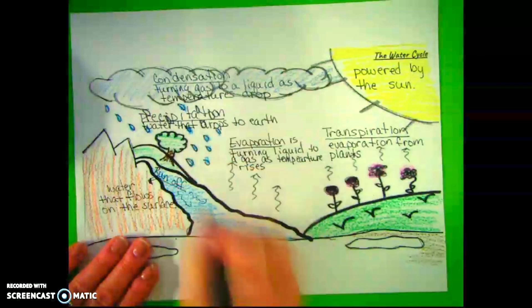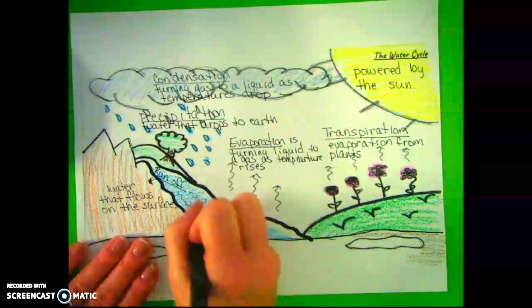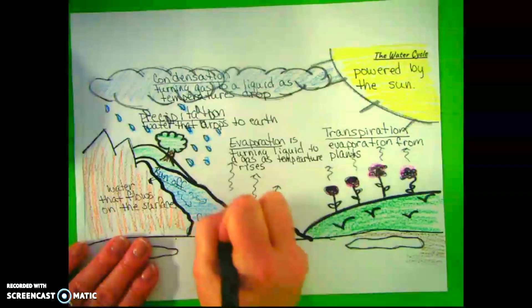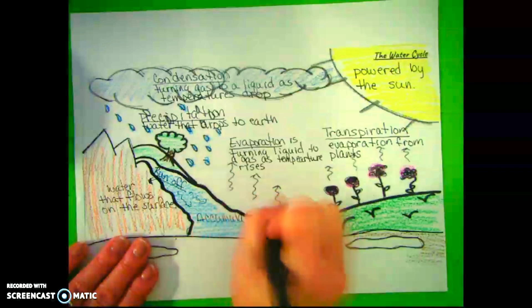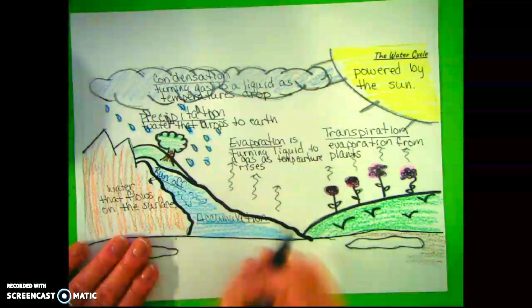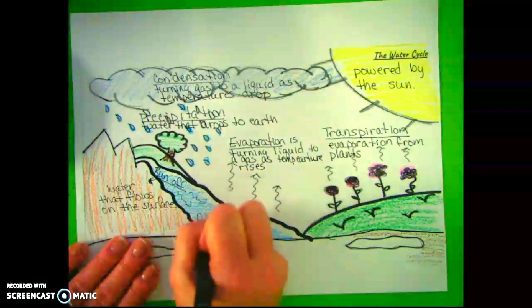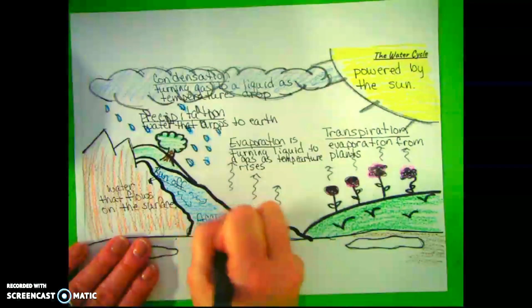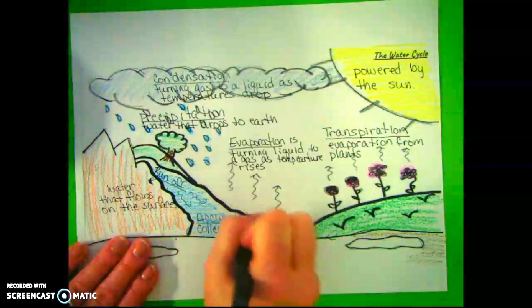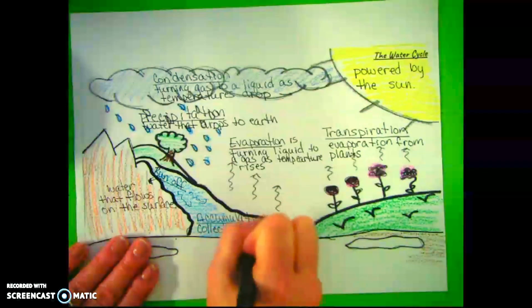The next one is accumulation. Accumulation is the collection of water on the Earth's surface. We see them as ponds, puddles, lakes, rivers, and other water that you see on top of the Earth's surface.